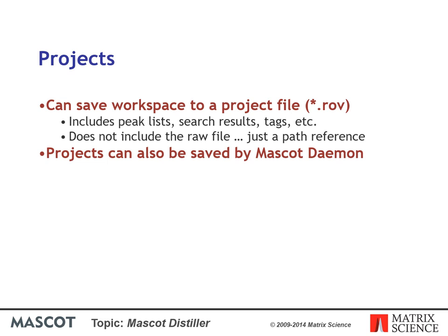Having processed the data and perhaps performed some Mascot searches and de novo sequencing, you will often want to save everything in the workspace — and you can do exactly that. The only thing that doesn't go into the project file is the raw file itself, for space reasons. If the reference to the raw file is broken, you can easily reattach it when opening a project. You can also choose to have Mascot Daemon save Distiller project files.